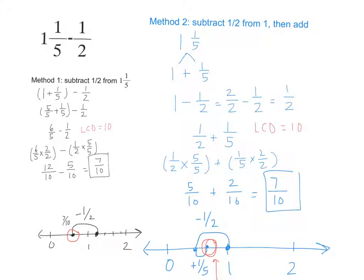For method 2, we're actually first subtracting 1 half from just the 1 and then we're adding another 1 fifth. So the reason why that works is because I know that 1 and 1 fifth is the same as 1 plus 1 fifth, right? So now I'm going to pretend that my new problem is just 1. I'm going to ignore the 1 fifth part. I'm just going to do 1 minus 1 half. We know that 1 minus 1 half is 1 half. Now, why do I need to add back 1 fifth? Because my original number wasn't 1. My original problem is 1 and 1 fifth. How much bigger is 1 and 1 fifth compared to 1? 1 fifth bigger.